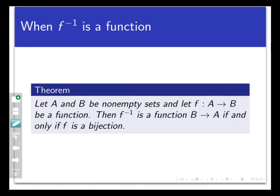Let A and B be non-empty sets, and let F be a function from A to B. Then the inverse of F is a function from B to A if and only if F is a bijection. Now this makes sense because we saw that if F fails to be injective, then the inverse splits inputs. And if F fails to be surjective, then the inverse doesn't assign each point to an output. So F must be both injective and surjective for its inverse to be a function.